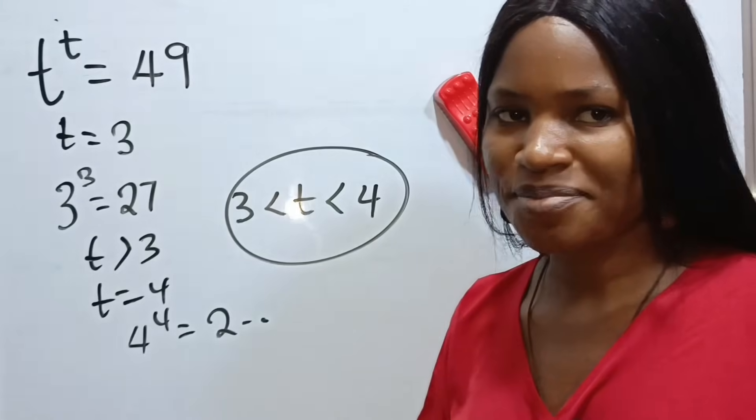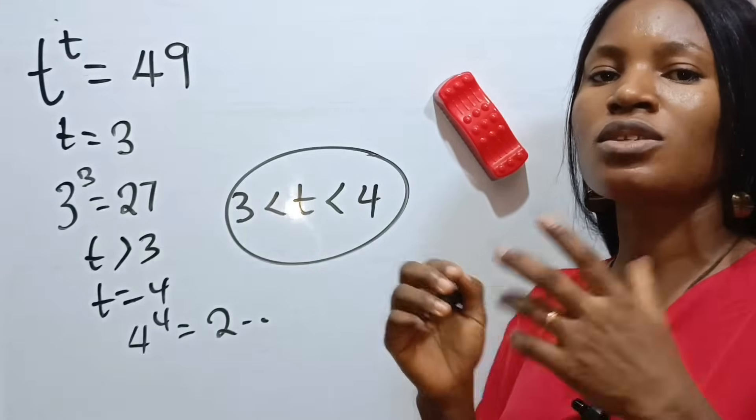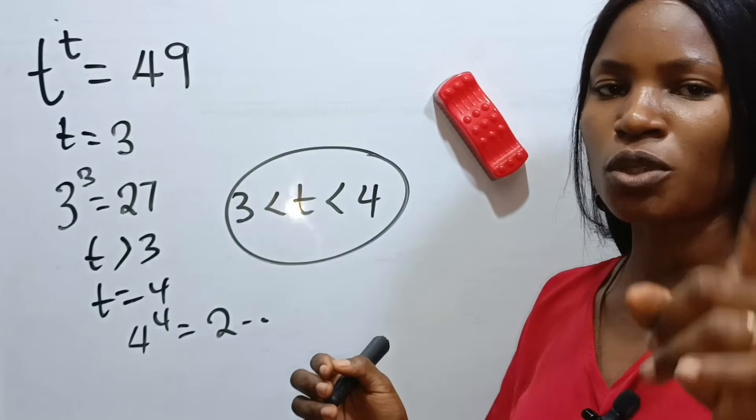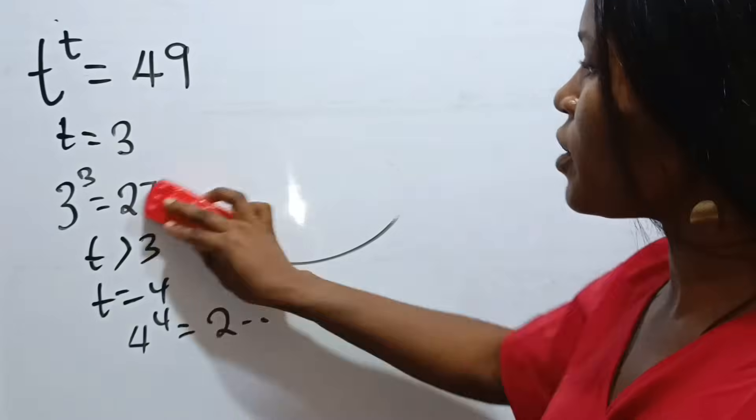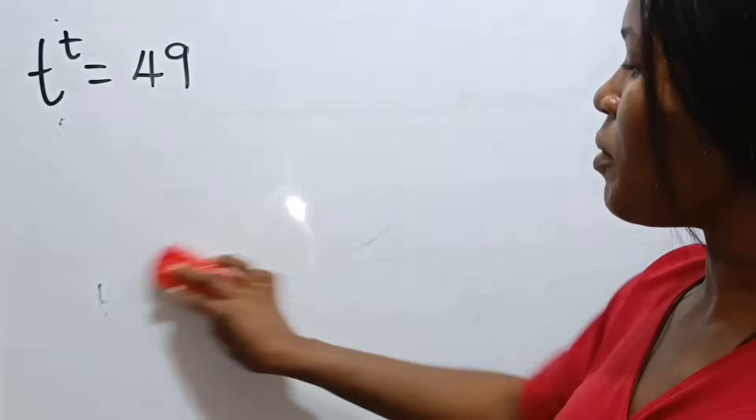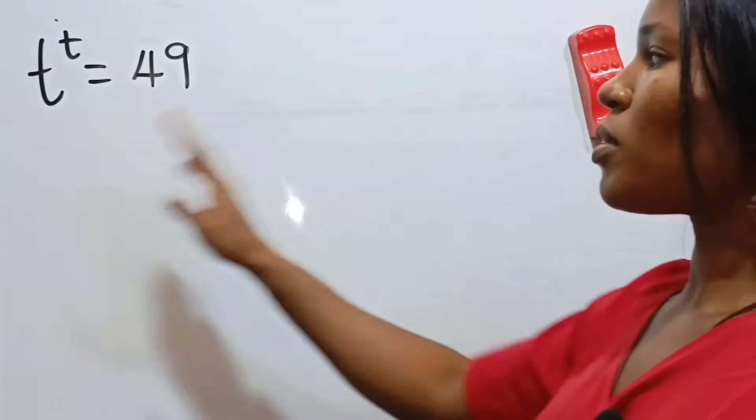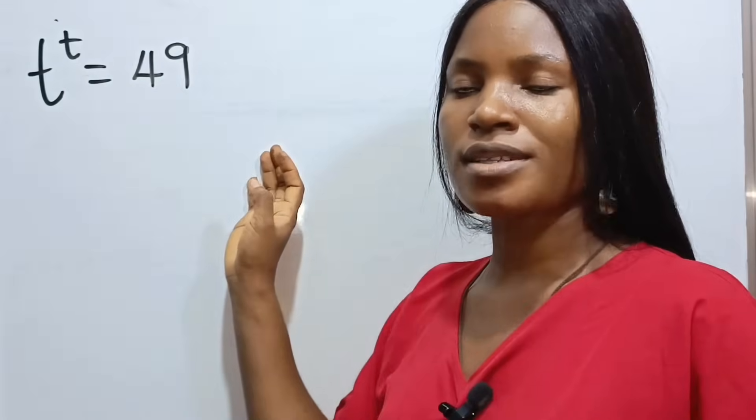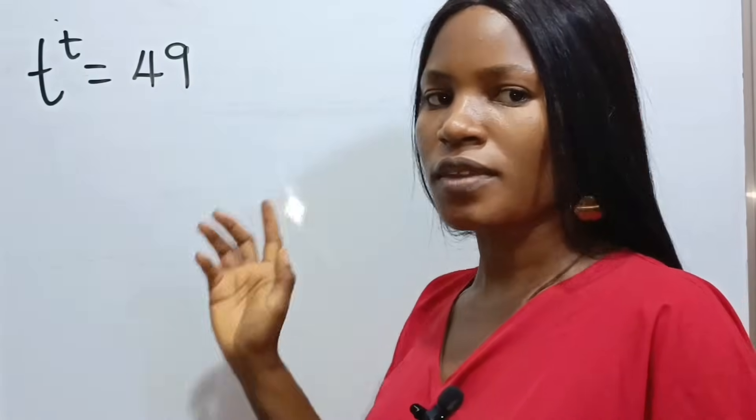Now, how do we get that? We can only do that using the Lambert W function. But before that, I'm going to explain everything in details. That means we need to take the ln of both sides of this equation. So, let's take ln of both sides of this equation.